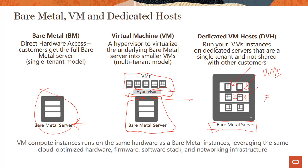The VM compute instances and the Dedicated VM Host scenarios run on the same hardware as a bare metal instance. The commonality is the bare metal machine — it leverages the same cloud-optimized hardware, firmware, software, and networking. This was a departure from many cloud vendors, what we call Gen 1 versus Gen 2, where we designed this infrastructure starting with bare metal and then everything was built as a first-class citizen on top of it.